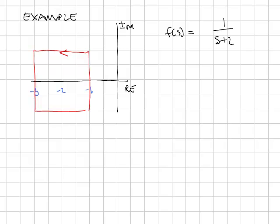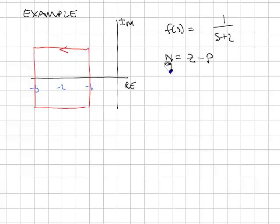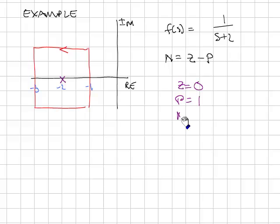Here's an example. I'm going to map the curve in red through my function 1 over S plus 2. The curve starts at minus 1 plus 1i, goes over to minus 3 plus 1i and then around. I take each one of those points and substitute them into 1 over S plus 2. I can predict the number of encirclements using the formula N equals Z minus P. In this case, Z equals 0 — there are no zeros in the function. P is the number of poles inside the curve; this function has one pole at minus 2, which lies inside the curve, so P equals 1. That means N equals 0 minus 1, so we expect one encirclement of the origin in the clockwise direction.